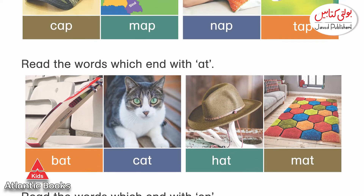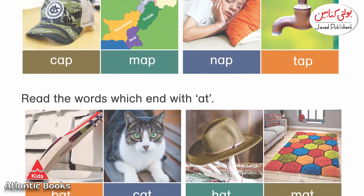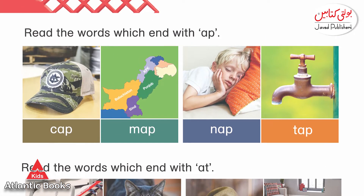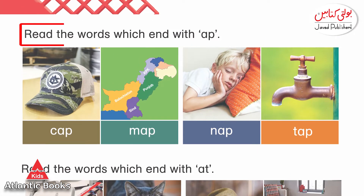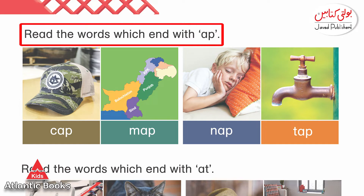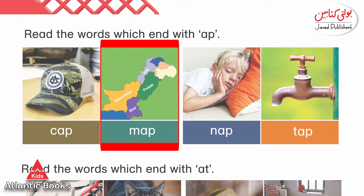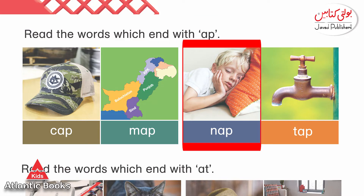Now, we have the next word which comes on page 7. It is A and P, the sound is 'ap'. We have: cap, map, nap, tap.